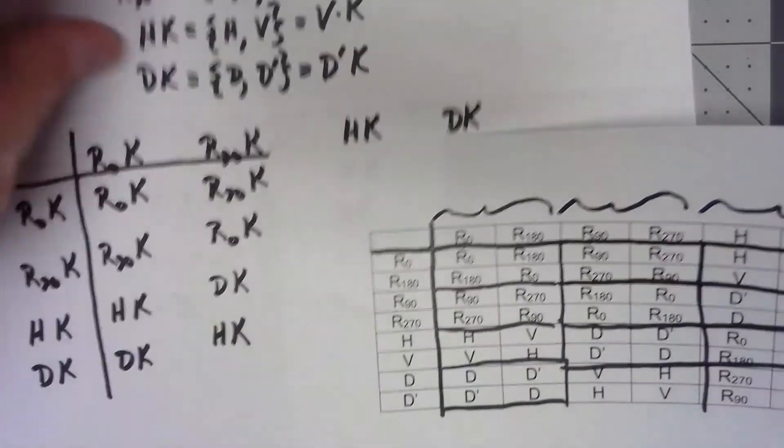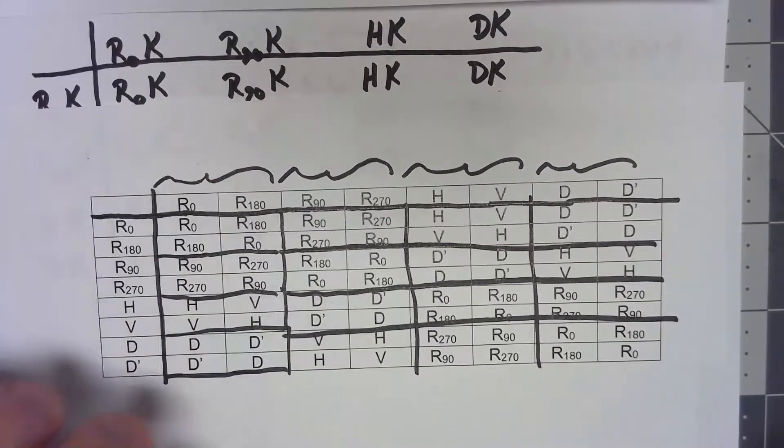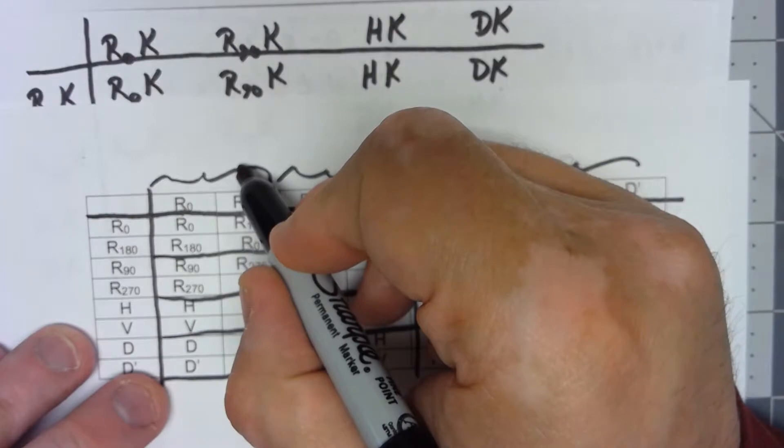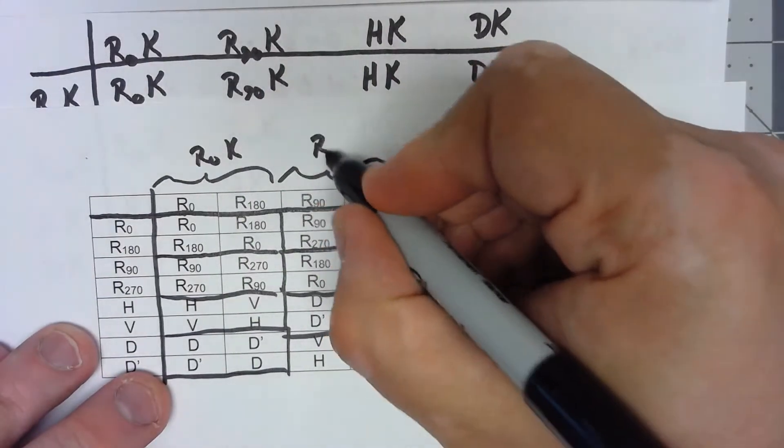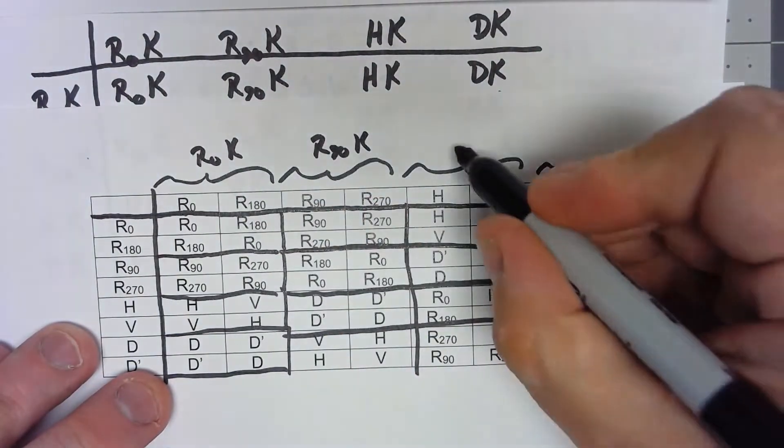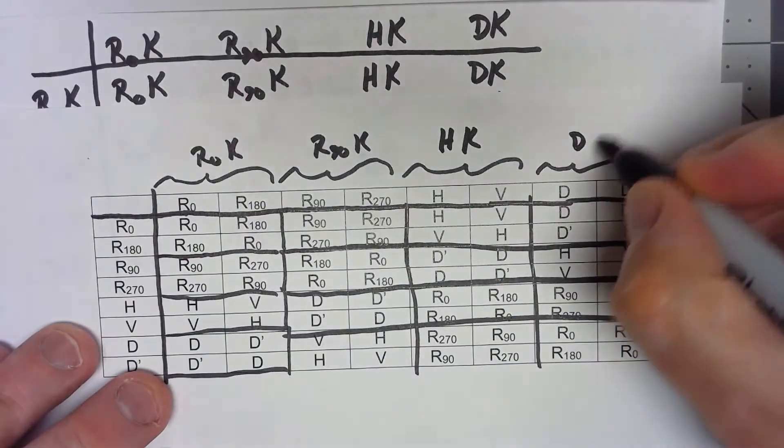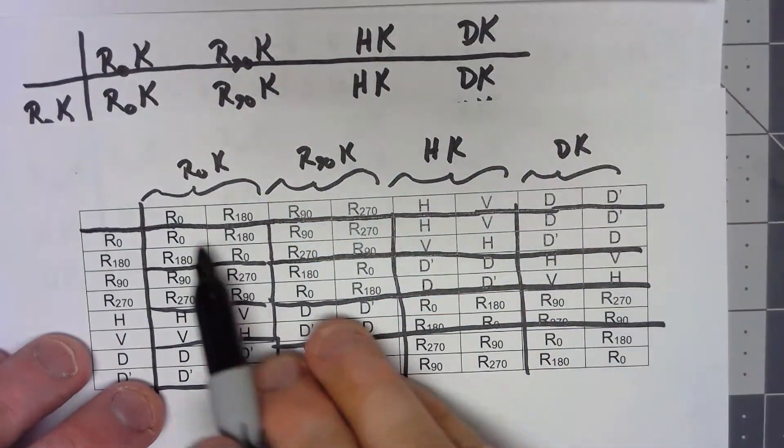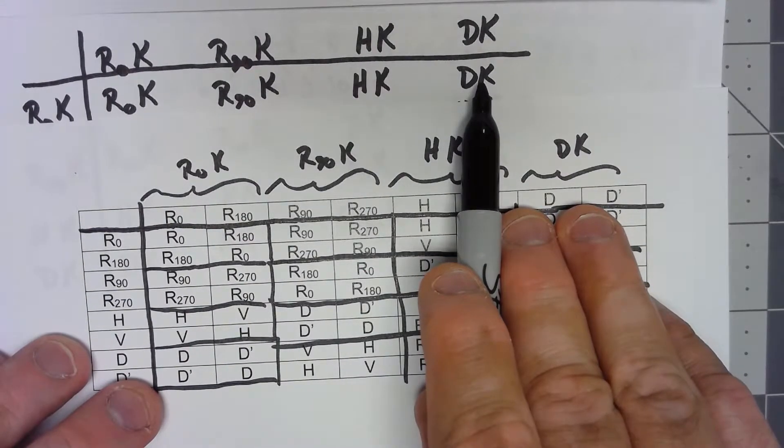In fact, and this is going to be tough to see on this camera, if we put this together, if I think about this two by two block being my R0K, this one is being my R90K, this one is being my HK, this one is being my DK, we're actually getting the exact same thing. These two by two blocks are the elements we got in our Cayley table here.